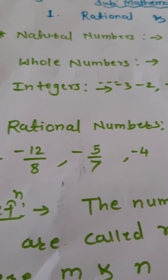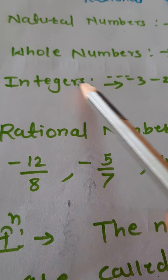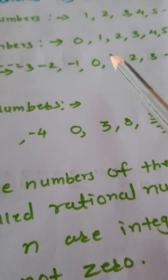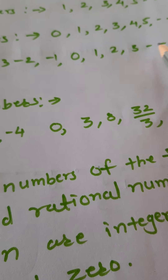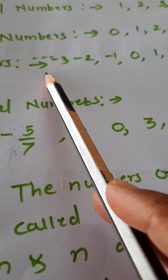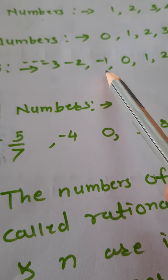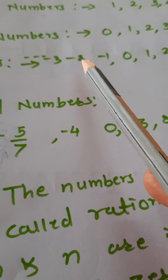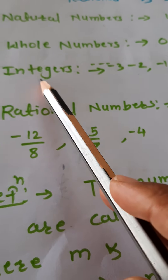The third group of numbers is called integers. In integers, 0 is also there. All positive numbers are there and all negative numbers are there. This group — 0, all positive numbers, and all negative numbers — is called integers.